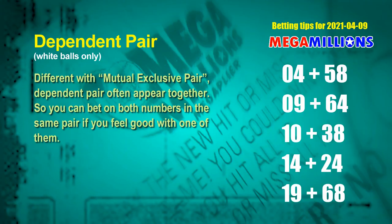Some numbers are mutual exclusive, while others are dependent. In the same dependent pair, you can bet on both because they often appear together in the winning numbers of a draw. The white ball dependent pairs for the next draw are: 04 and 58, 09 and 64, 10 and 38, 14 and 24, and 19 and 68.